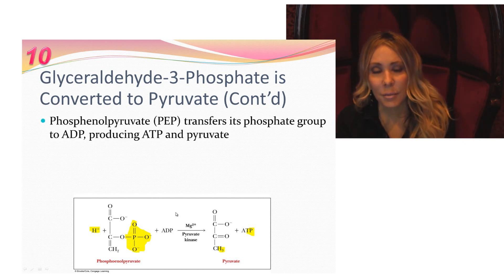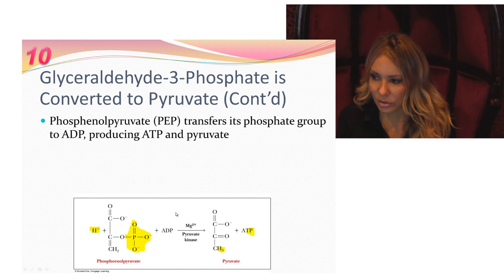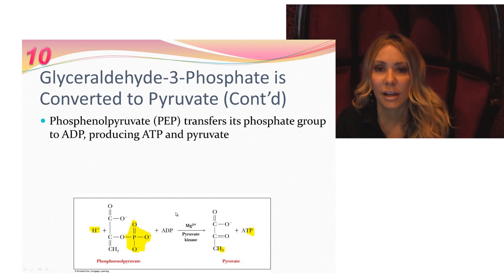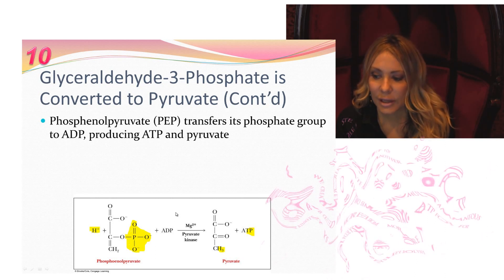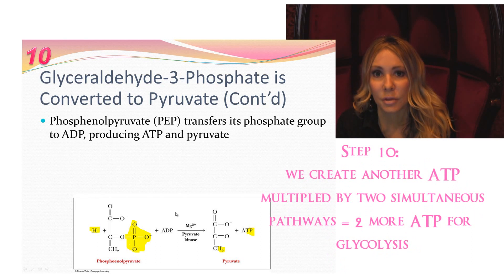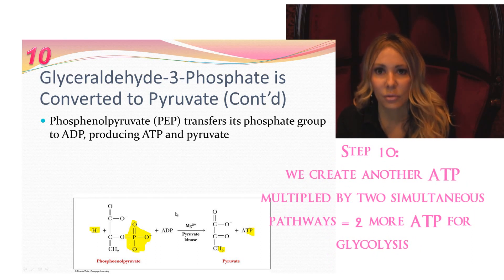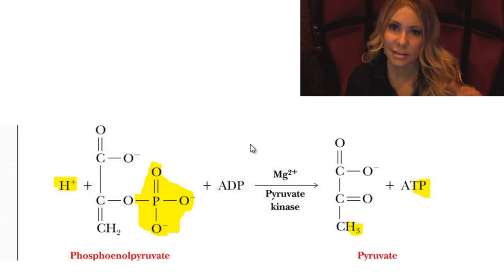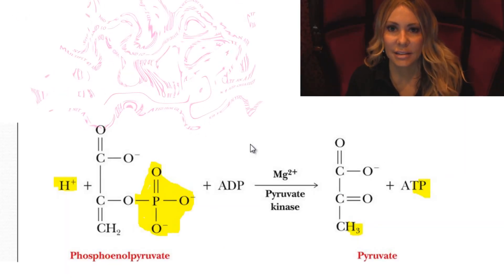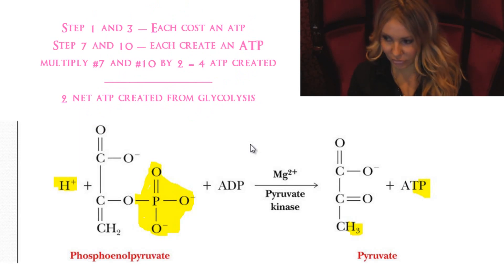Step ten: PEP — short for phosphoenolpyruvate — is going to transfer its phosphate group to ADP and create another molecule of ATP. We have two phosphoenolpyruvates per molecule of glucose, so at this point we're creating two more ATP molecules. If we were at zero at step seven, now we have a net ATP production of two.